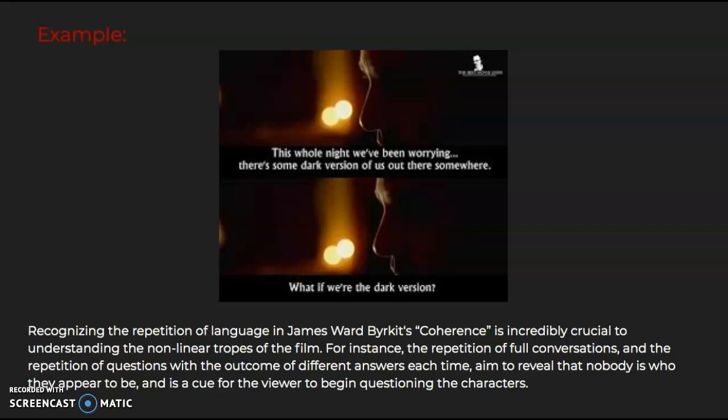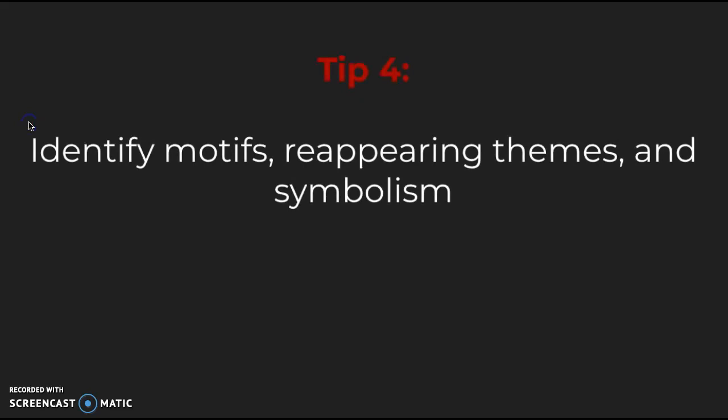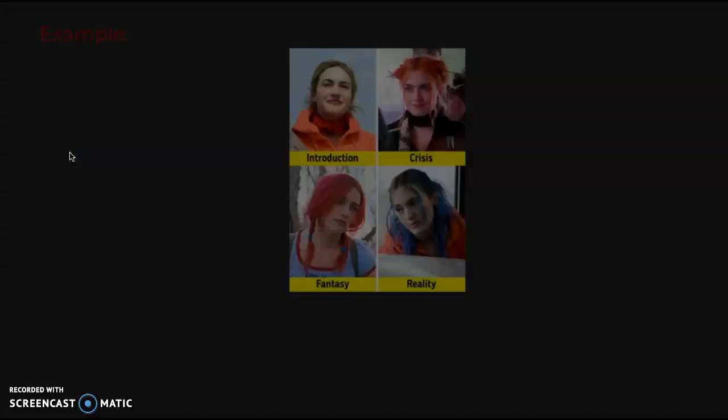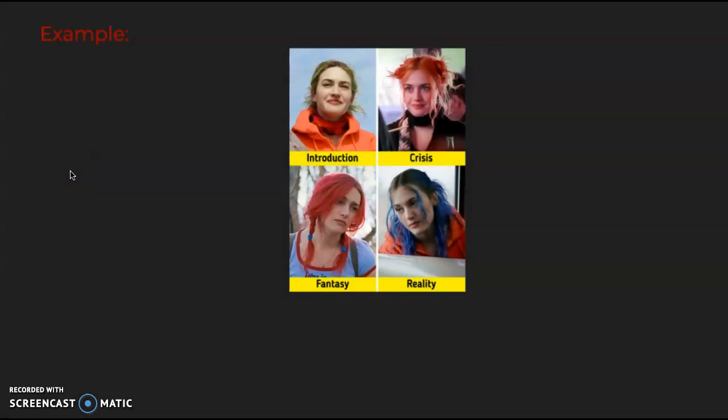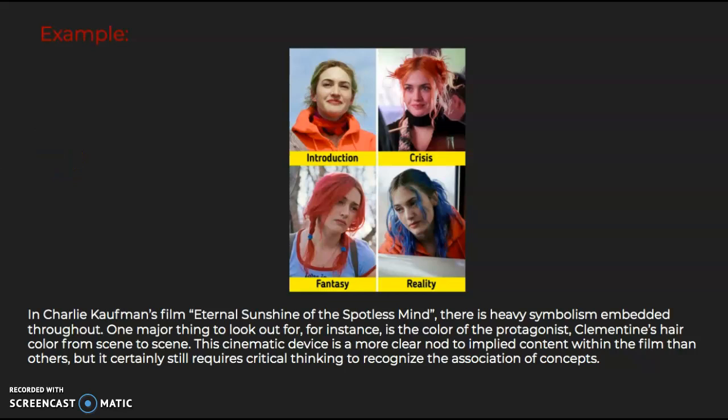On to tip four: it is integral to identify motifs, reappearing themes, and symbolism within a psychological thriller film. For instance, in Charlie Kaufman's film Eternal Sunshine of the Spotless Mind, there is heavy symbolism embedded throughout. One major thing to look out for is the color of the protagonist Clementine's hair from scene to scene. This cinematic device is a more clear nod to implied content within the film than others, but it certainly still requires critical thinking to recognize the association of concepts.